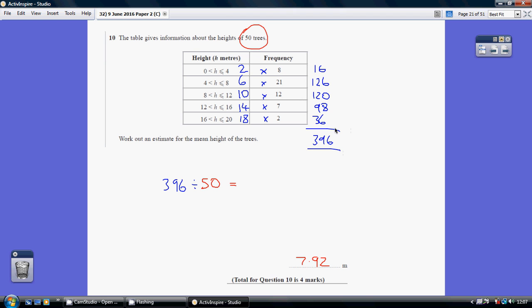Remember, that's an estimated height. So what's the mean height of these trees? The estimated mean is 396 metres spread across the 50 trees. So 396 divided by 50 gives us 7.92 metres.